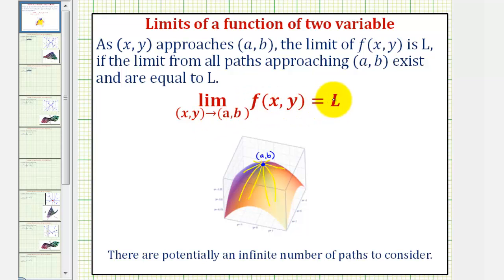This limit equals L because as we approach the point (a, b) from all these paths, notice how the function value is approaching the same value which would be L. Of course this doesn't illustrate all the possible paths. Notice how there are potentially an infinite number of paths to consider.